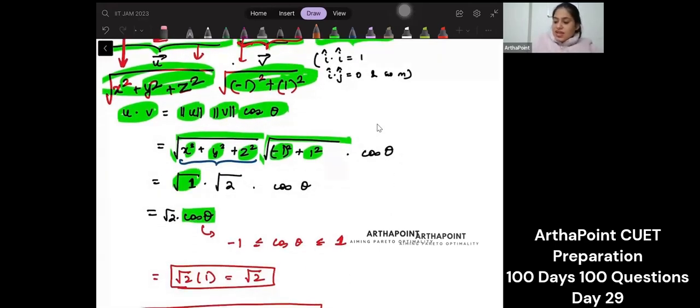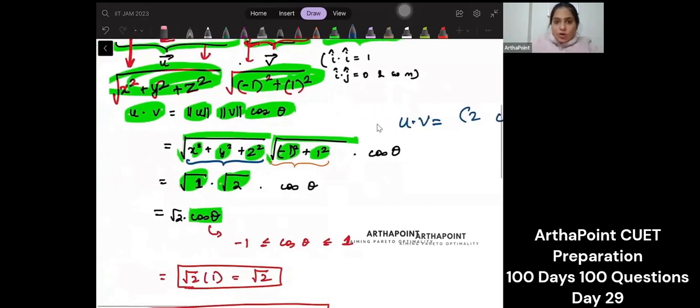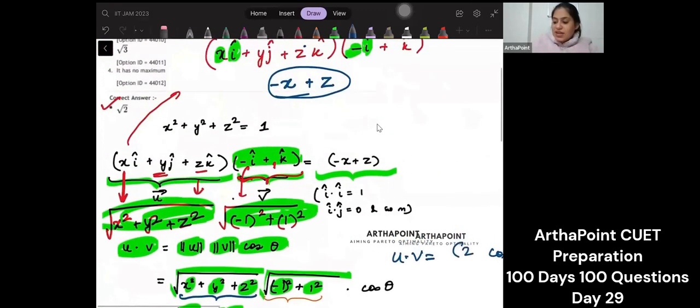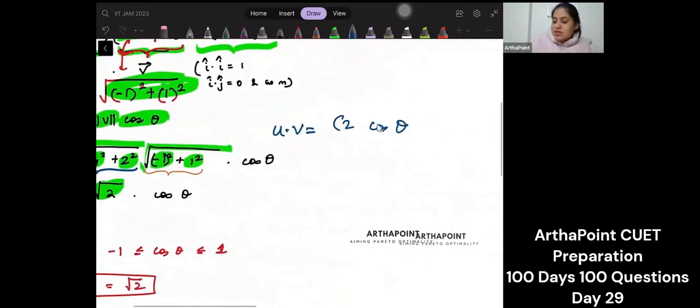And this is given to me as, I mean, this I will find as root two. So this is root two. So I have got that u dot v. This is root two cos theta. And yehi dot product hi toh minus x plus y nikla tha. So I have got that minus x plus z is root two cos theta.